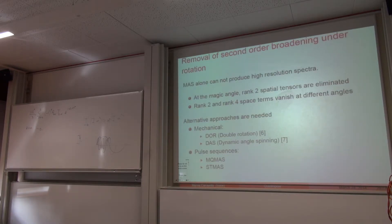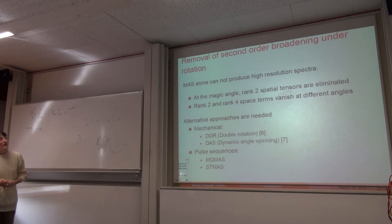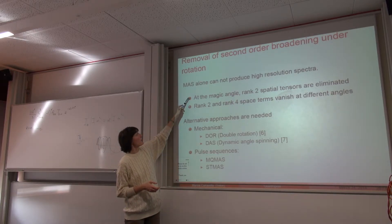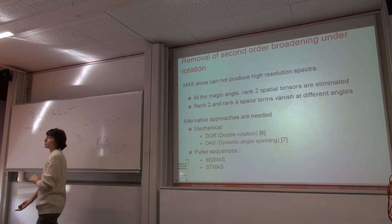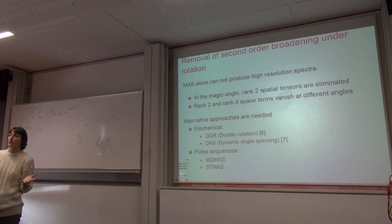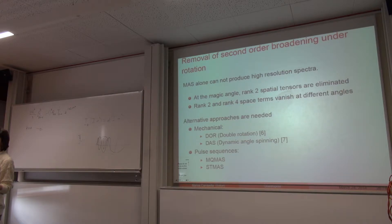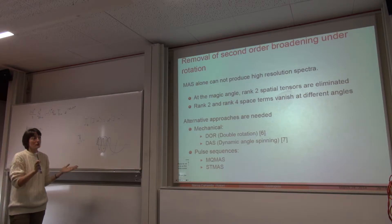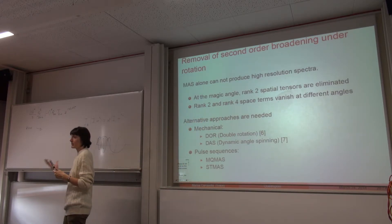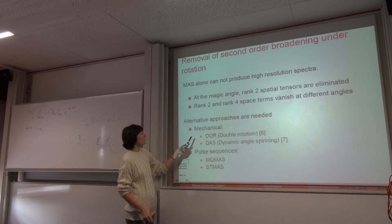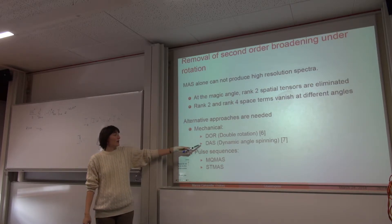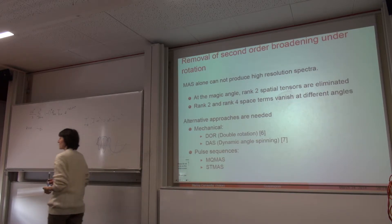Since MAS alone cannot give high resolution for quadrupolar nuclei, special methods are needed. MAS removes all rank-2 tensors — useful because it also eliminates CSA and dipole–dipole anisotropy — but the rank-4 terms vanish at a different angle (30.5° or 70.1°). To eliminate those, one can use mechanical methods: DOR (double rotation) or DAS (dynamic angle spinning), or pulse sequences like MQMAS and STMAS.